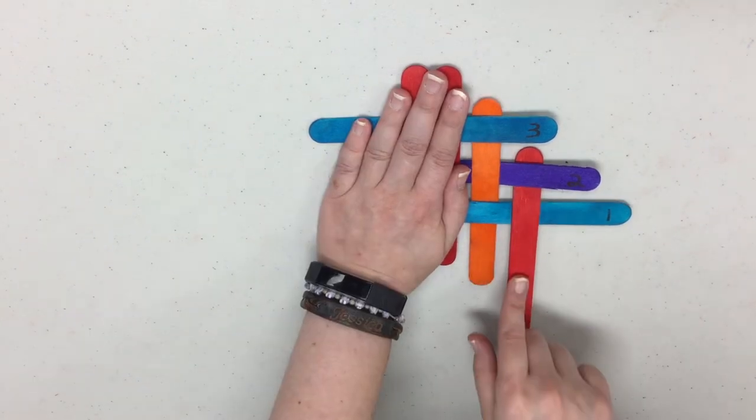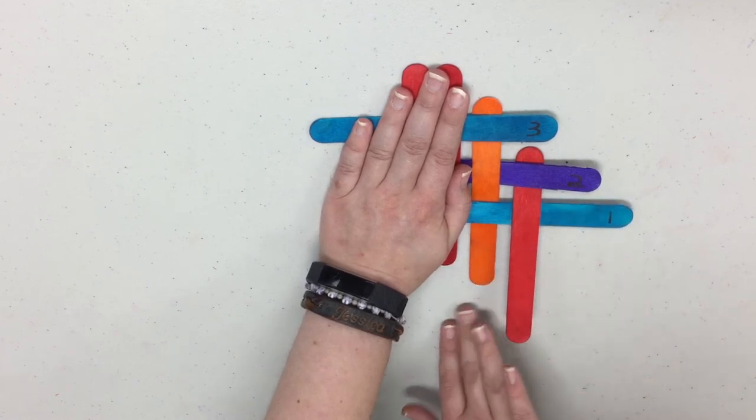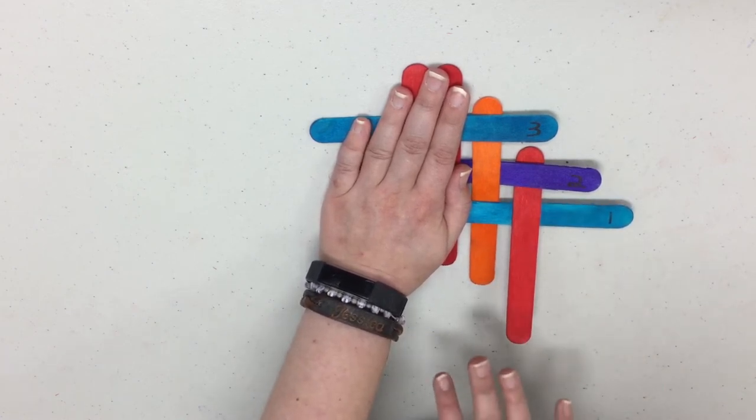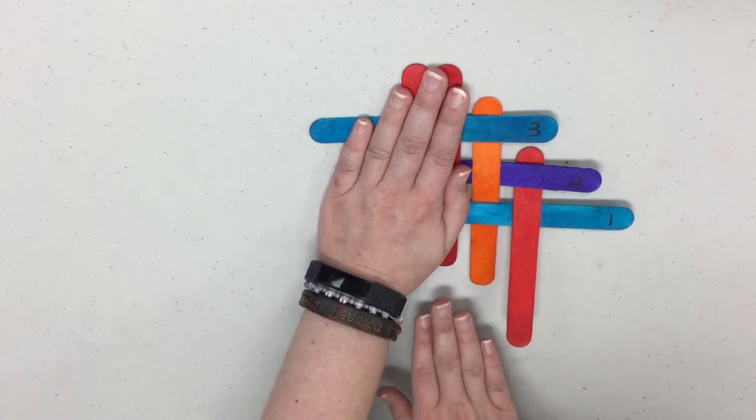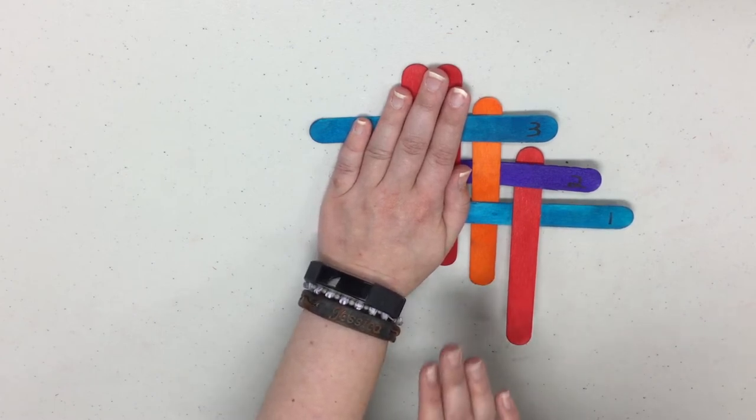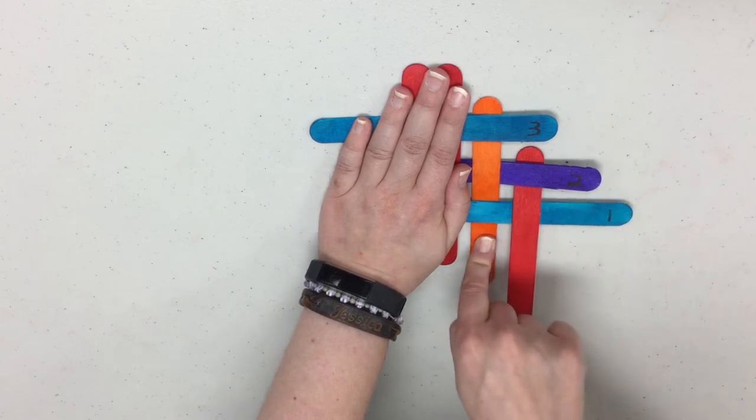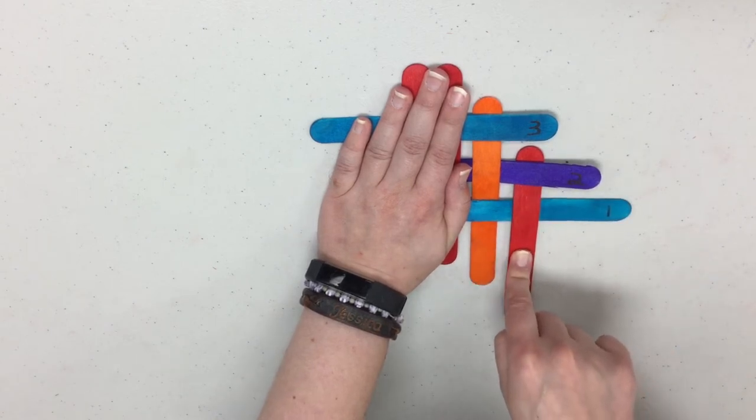If you look at these two craft sticks now you'll notice that these ends right here are sticking out a good bit from everything else. This is what you're going to be looking for as you continue to build your chain because our next stick is going to go right here under the shorter and over the longer.